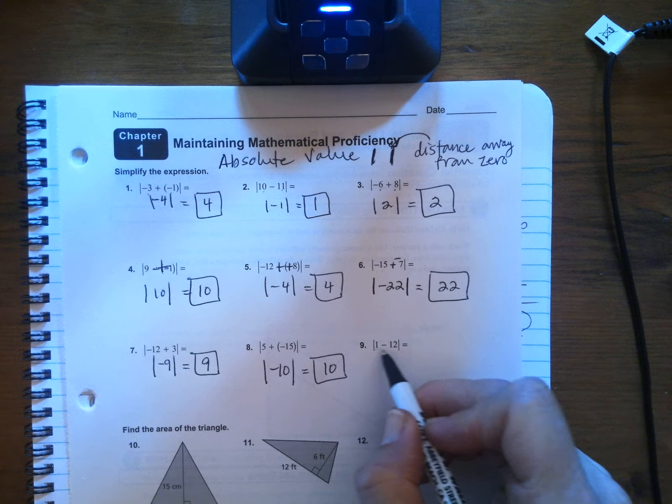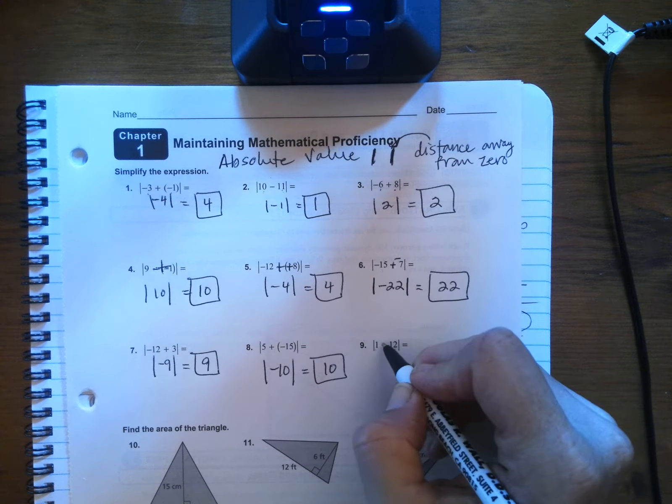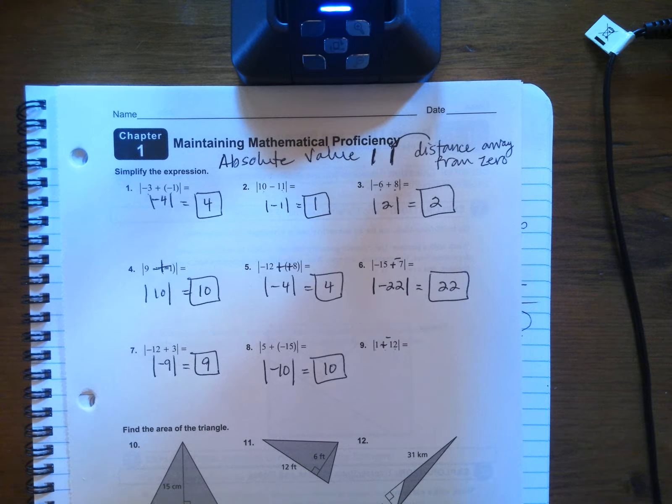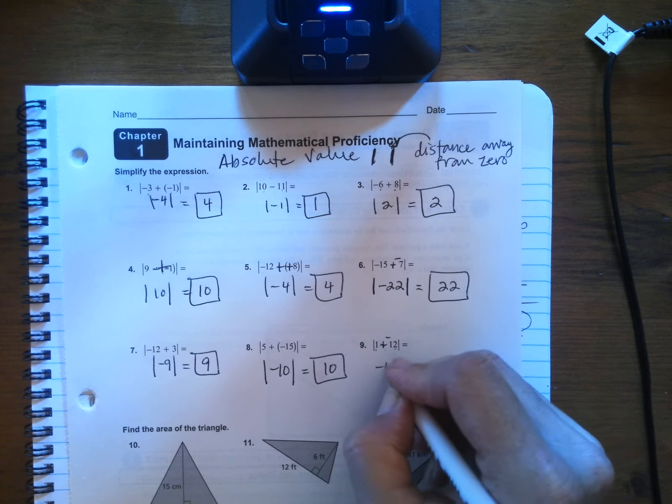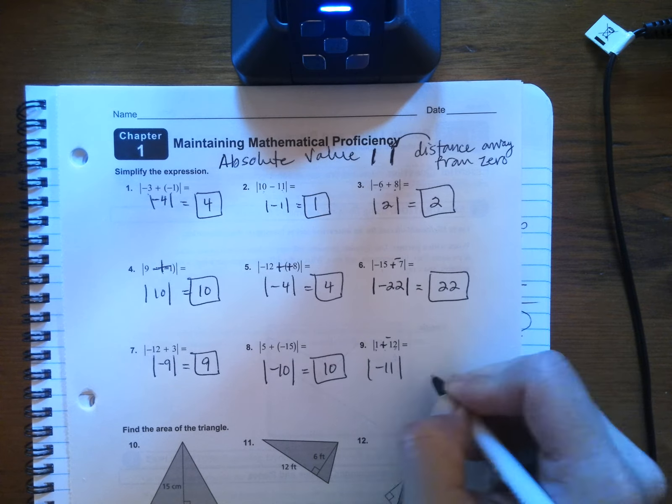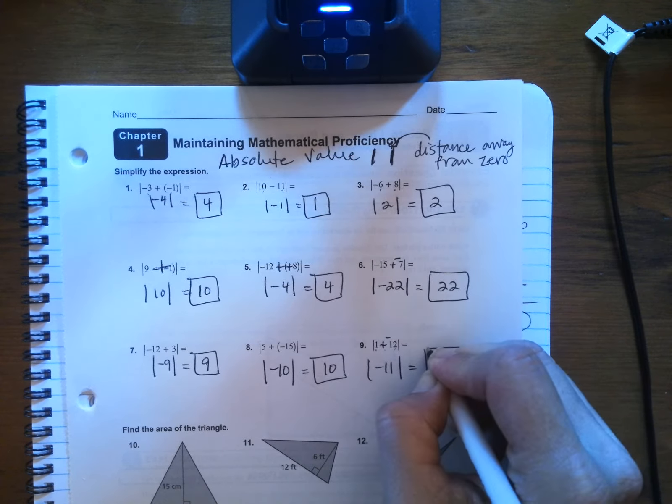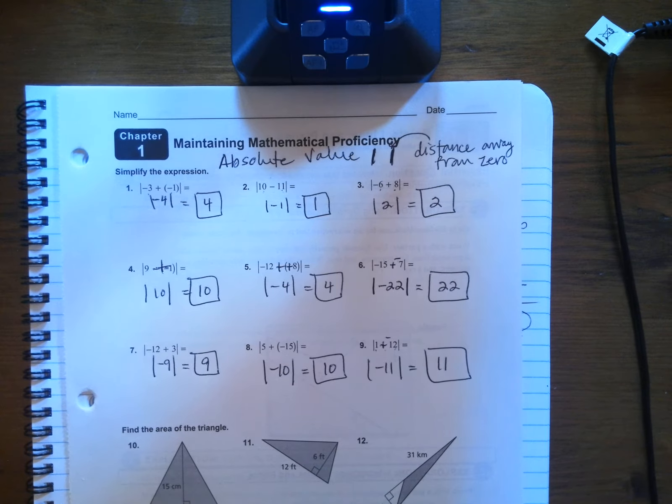And finally, one minus 12 is the same thing as one plus 12 negatives. One negative and one positive will cancel. You'll end up with 11 negatives. So the absolute value is 11.